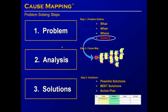The cause mapping method consists of three problem-solving steps. First, we'll define the problem, including the impacts to the organization's goals. We will then begin with those impacted goals and ask why questions to form cause-and-effect relationships showing the causes that contributed to the incident. Then, once we have all of the causes, we will brainstorm possible solutions, pick the best solutions, and then create an action plan.